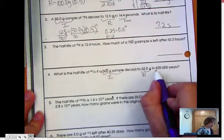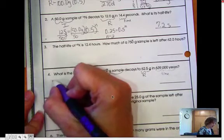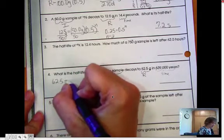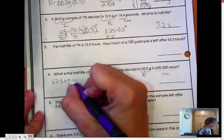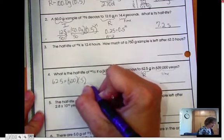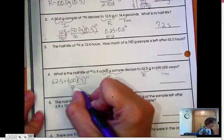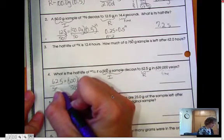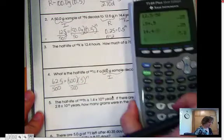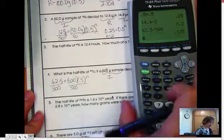And this is how much time has passed. So what I have is 62.5 equals 500 grams times 0.5 raised to the nth power. Simplify that. 62.5 divided by 500 is 0.125.